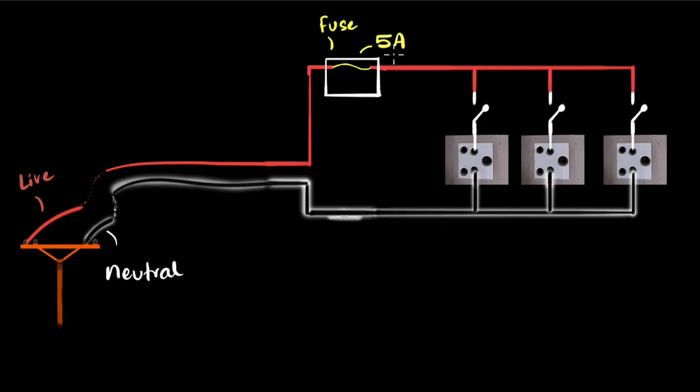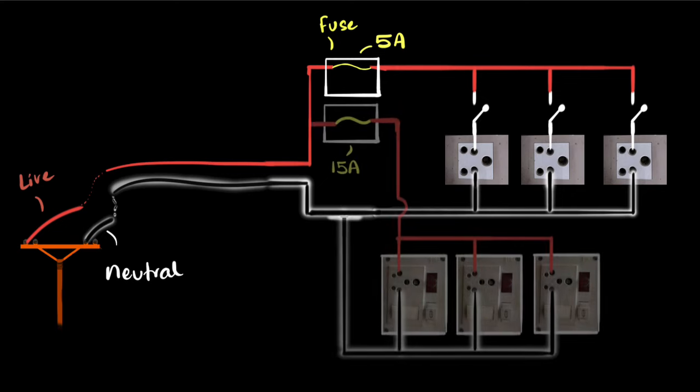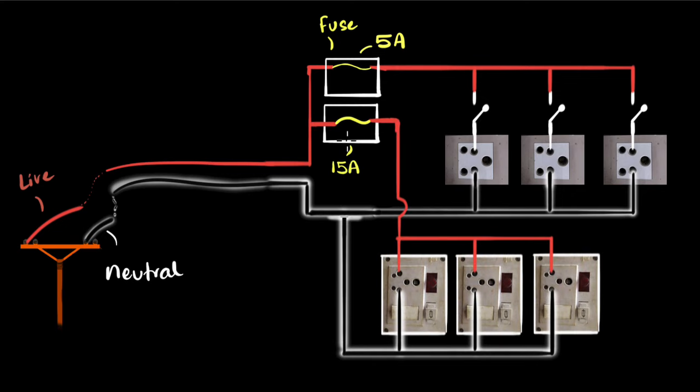Why 5 amperes? Because most appliances don't need a lot of current. But what about your refrigerators, geysers, air conditioners? They definitely need a lot more current. So for them we will build a separate circuit. Can you see, I now have a separate parallel circuit over here with a much higher fuse, say 15 ampere fuse.